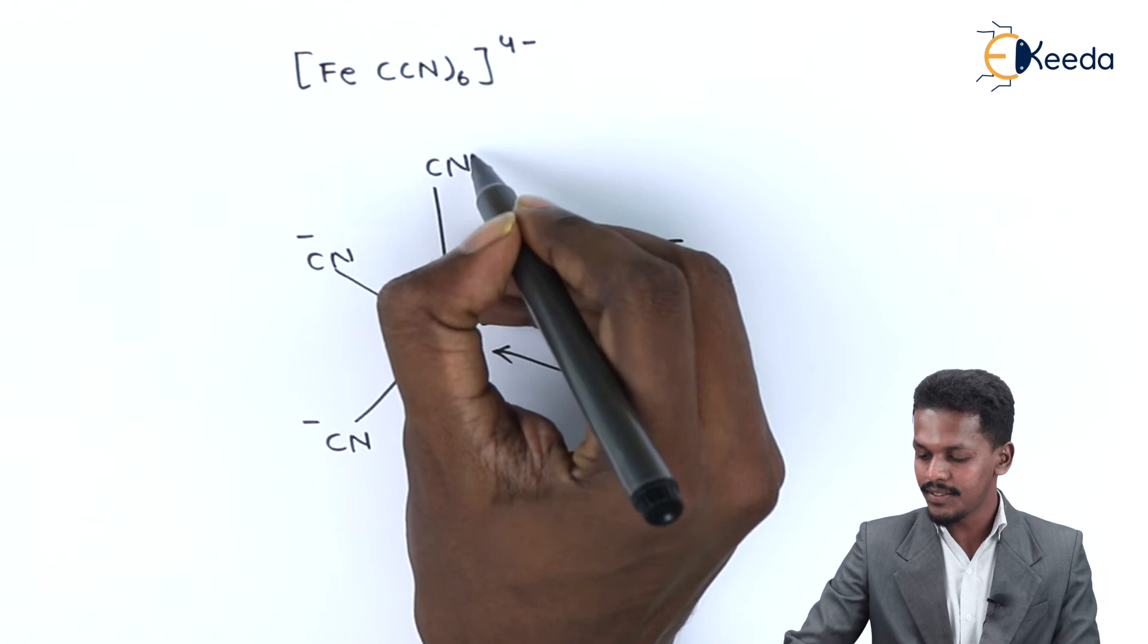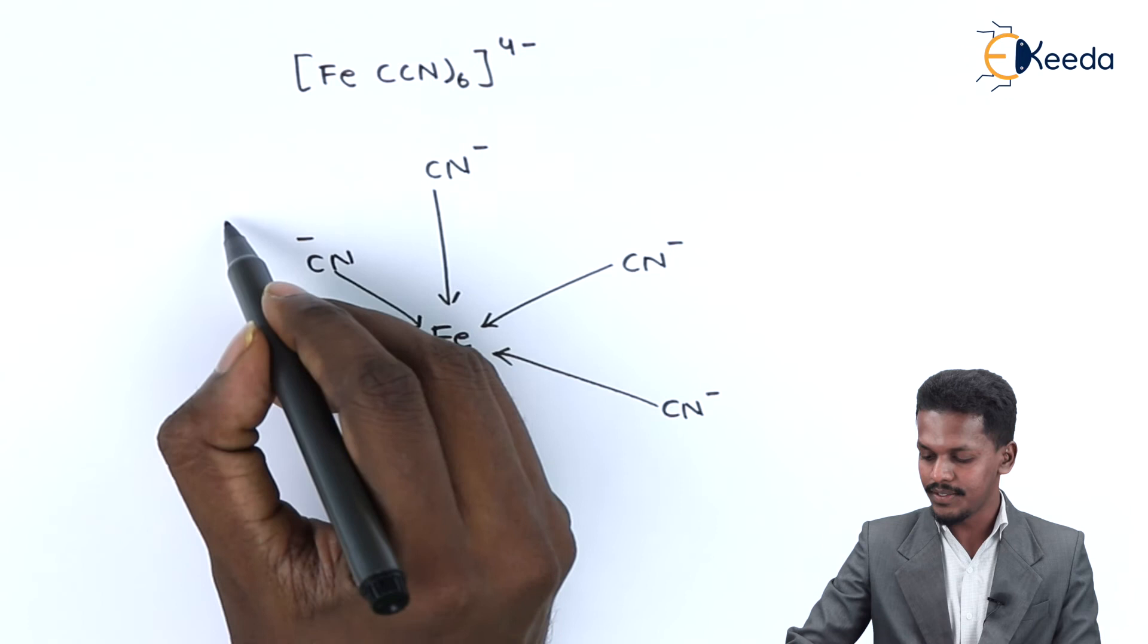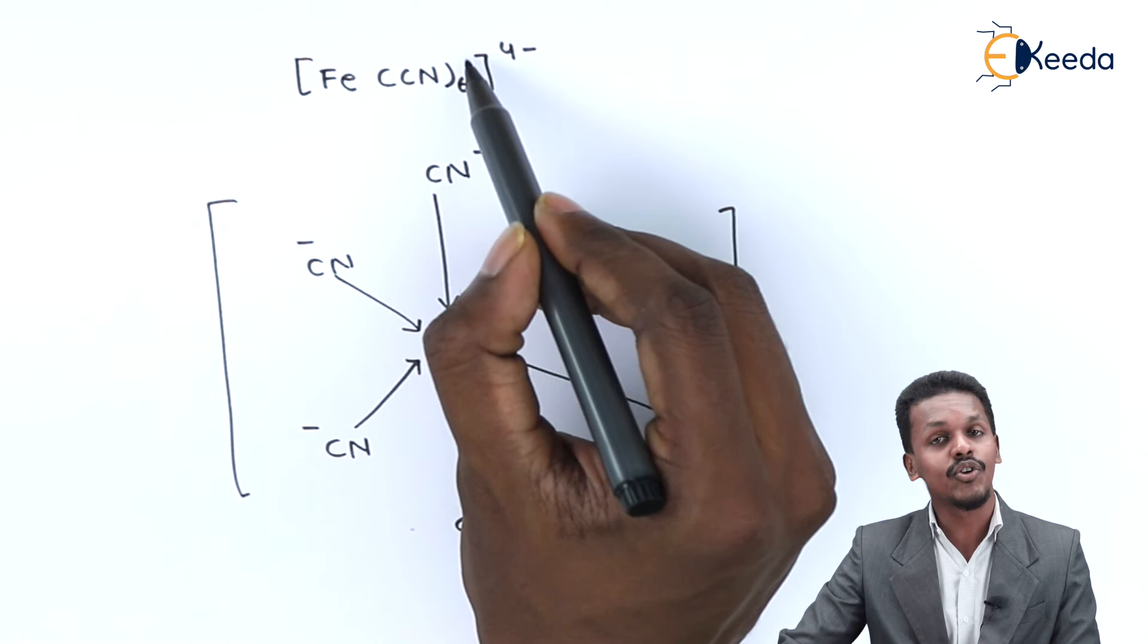This is how we can represent it. We can also find that a charge of 4- is on the complex. Fe has an oxidation state of 2+, so the overall complex has a charge of 4-.